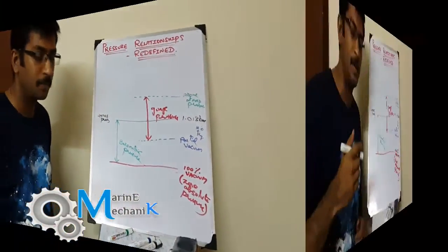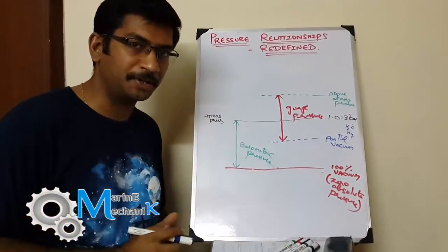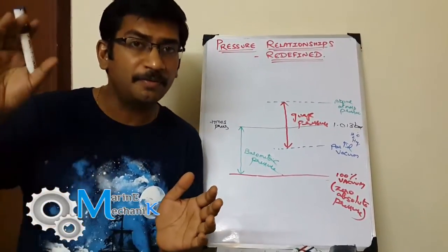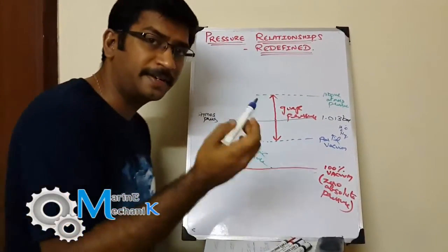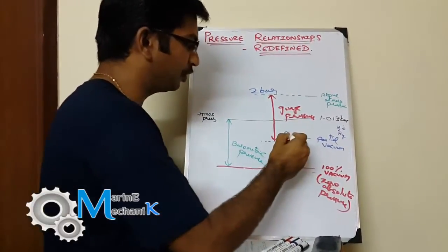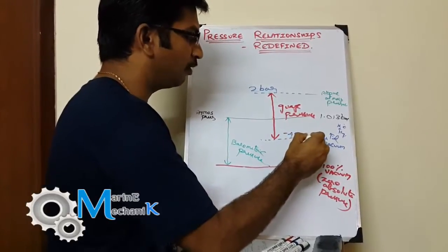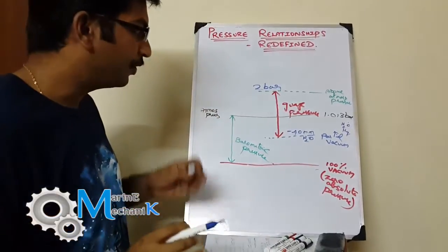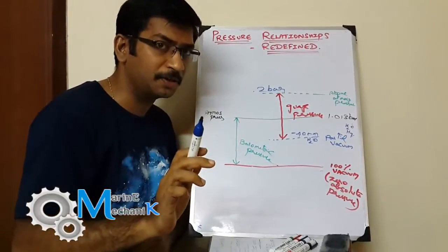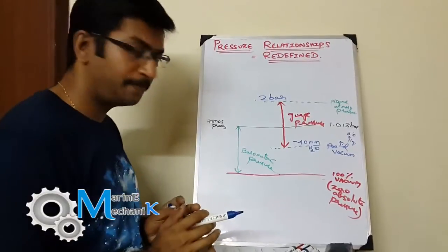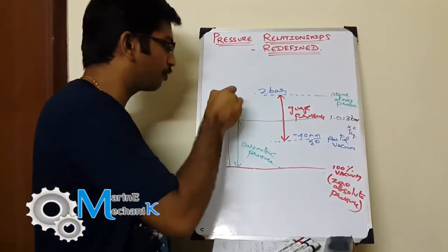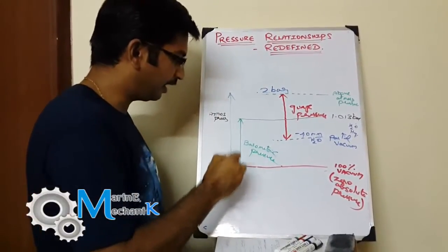The last concept is absolute pressure. Zero absolute pressure is completely different from absolute pressure. If the gauge reads a pressure above atmospheric — say 2 bar, which is roughly 1 bar above atmospheric — then absolute pressure equals gauge pressure plus atmospheric pressure. You measure from the gauge reading all the way down to the zero absolute pressure line. That total is the absolute pressure.